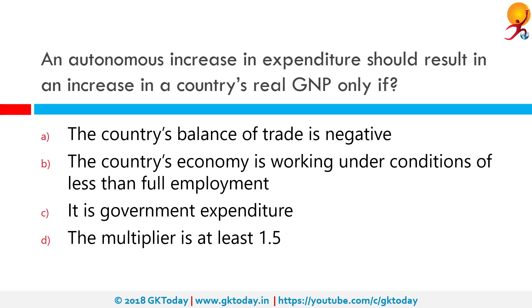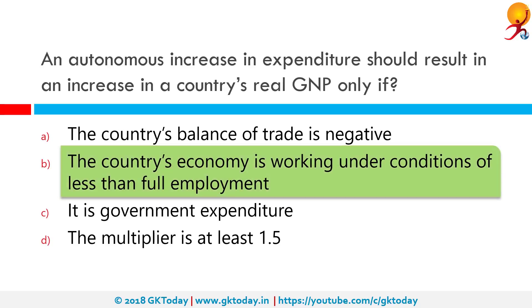An autonomous increase in expenditures should result in an increase in a country's real GNP only if what? GNP, or Gross National Product, is a broad measure of a nation's total economic activity — the value of all finished goods and services produced in a country in one year by its nationals. The correct answer is: only when the country's economy is working under conditions of less than full employment.